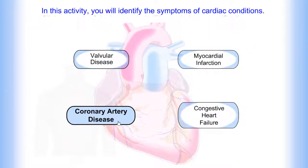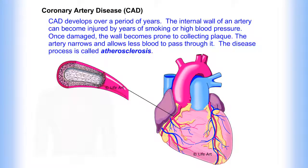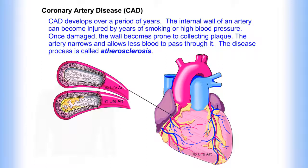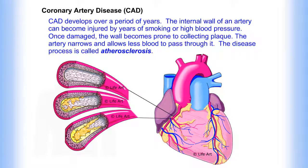Coronary artery disease. CAD develops over a period of years. The internal wall of an artery can become injured by years of smoking or high blood pressure. Once damaged, the wall becomes prone to collecting plaque. The artery narrows and allows less blood to pass through it. The disease process is called atherosclerosis.